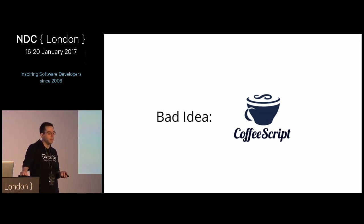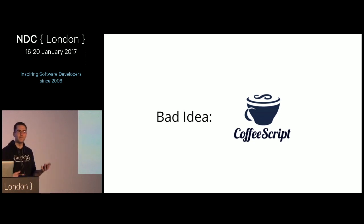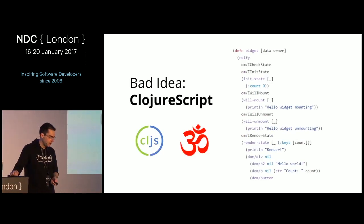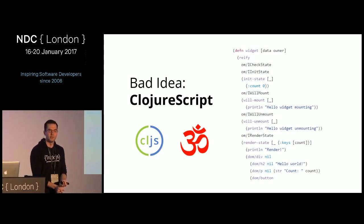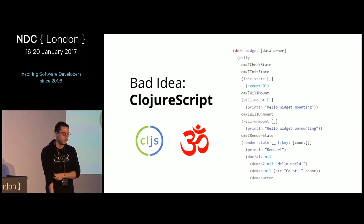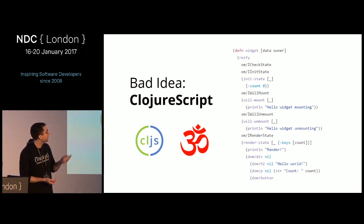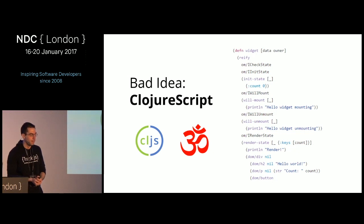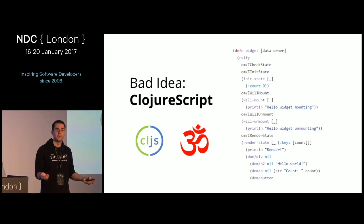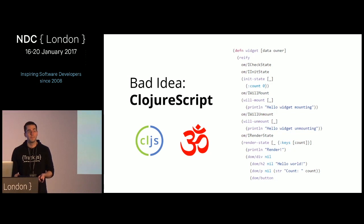Another bad idea: esoteric languages like ClojureScript. People are actually trying to write web apps with ClojureScript, and I think that's a little crazy — that syntax is pretty wild and going to be really hard to maintain unless your team is a bunch of functional wizards who've been doing Lisp since the 70s. ClojureScript might make sense for that team specifically, but probably not for your average project.